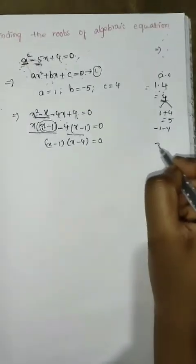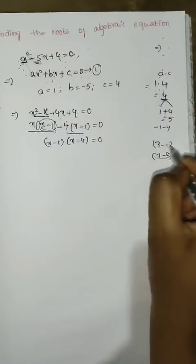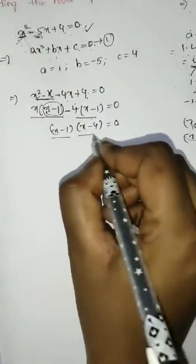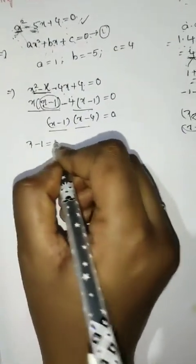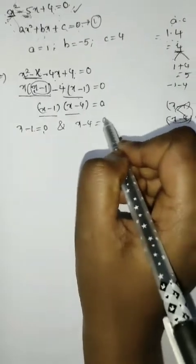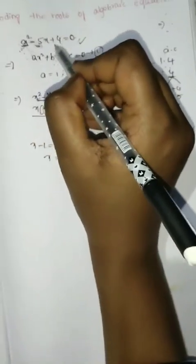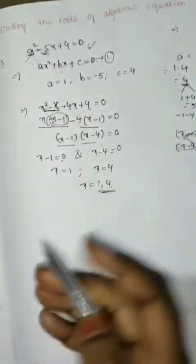We get x minus 1 into x minus 4. So x minus 1 and x minus 4 are factors of the given equation x squared minus 5x plus 4 equals 0. Setting each factor to zero: x minus 1 equals 0 and x minus 4 equals 0, giving x equals 1 and x equals 4. Therefore, x equals 1 and 4 are the roots.